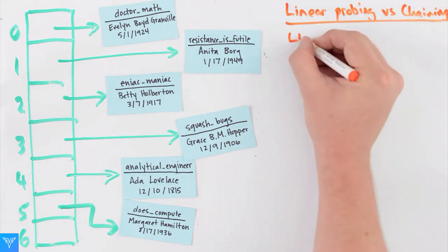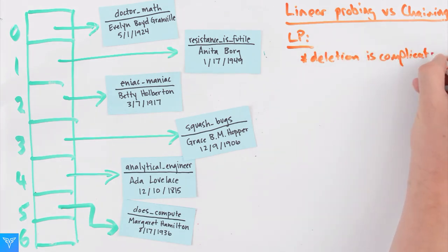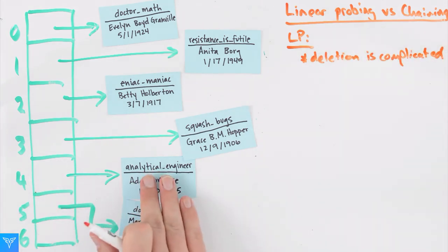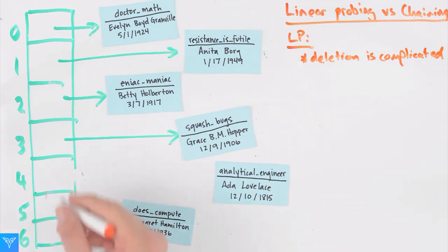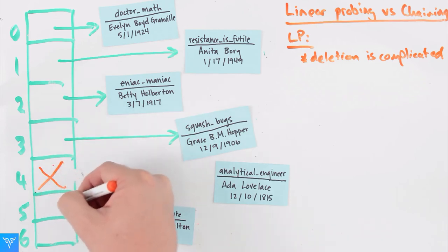Linear probing is a little more complicated, especially when users are deleted. For example, if Ada Lovelace decided to leave, we have to remember when using linear probing that there was a user here, and there are methods for dealing with that.